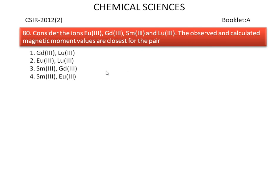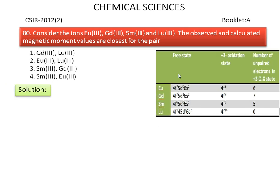The options are shown here. Now we discuss the answer for the above question. These are the electronic configuration in free state and plus-3 oxidation state for Europium, gadolinium, samarium and lutetium. The number of unpaired electrons is also available for these elements.